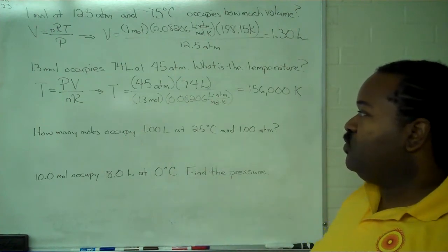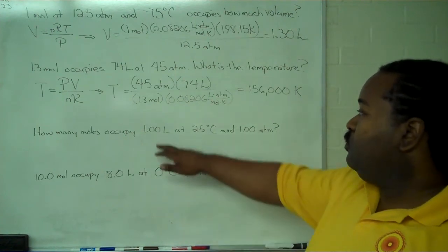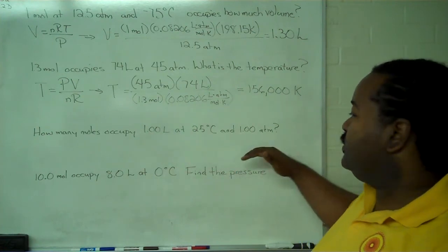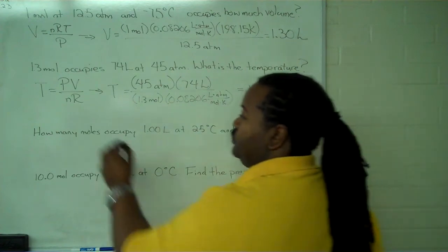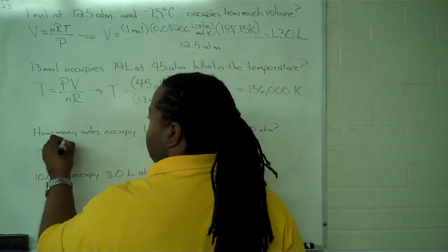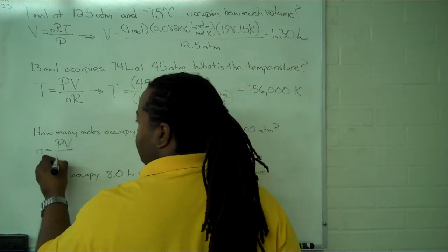Next we have a question looking for the number of moles when we're given a volume of 1 liter, temperature of 25 degrees Celsius, and a pressure of 1 atmosphere. Since this is the number of moles, we have N equals PV over RT.